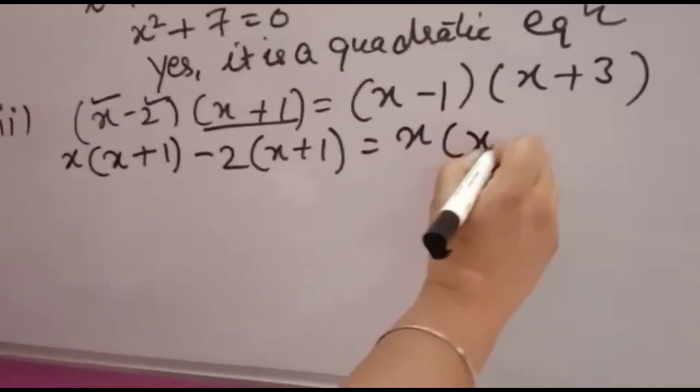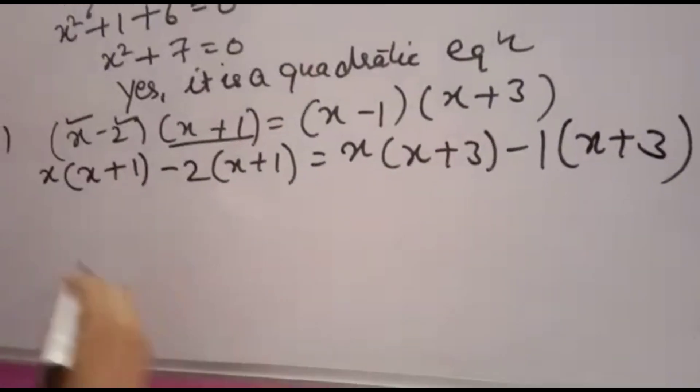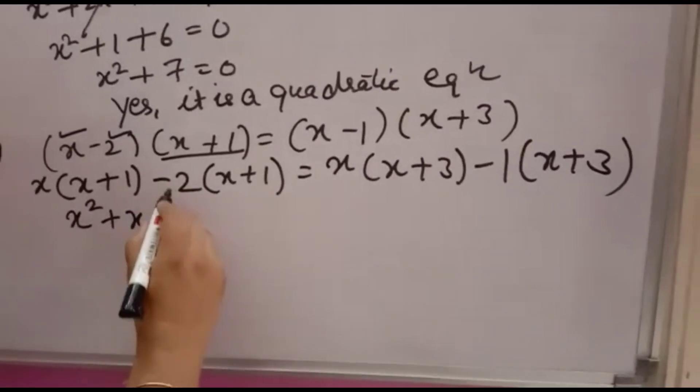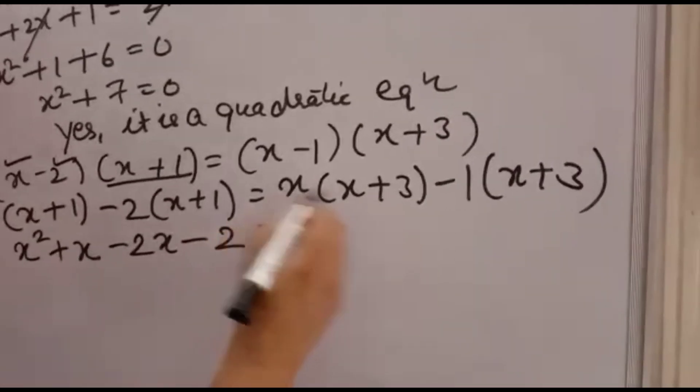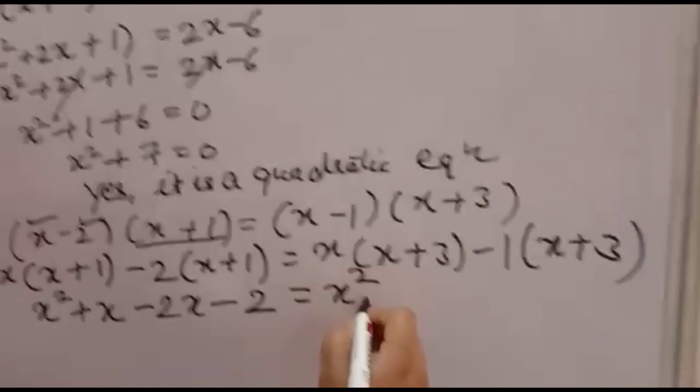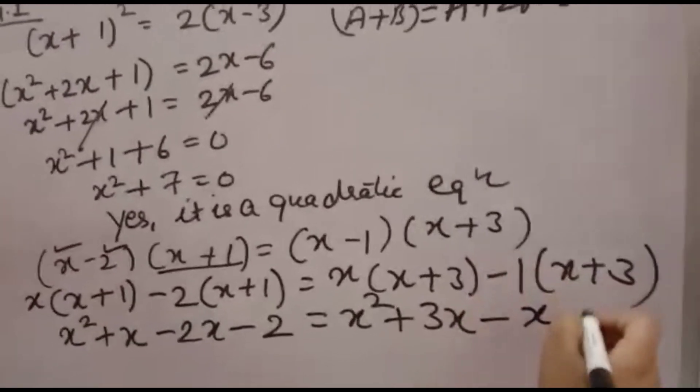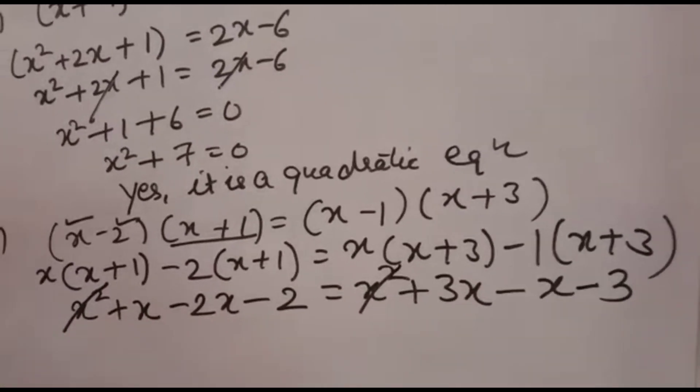Same way, x into full term x plus 3, then minus 1 into full term x plus 3. x into x is x², x into 1 is x. Minus 2 into x minus 2x, minus 2 into 1 minus 2. x into x is x², x into 3 is 3x. Minus 1 into x minus x, minus 1 into 3 minus 3. Now, x² minus x² is canceled.